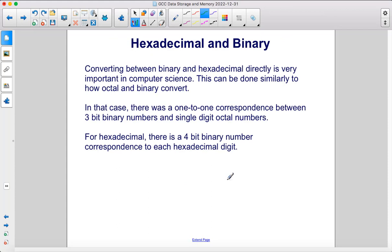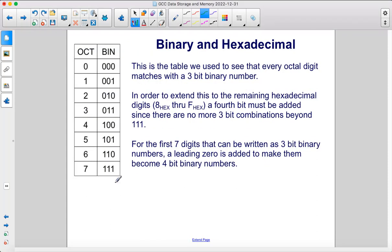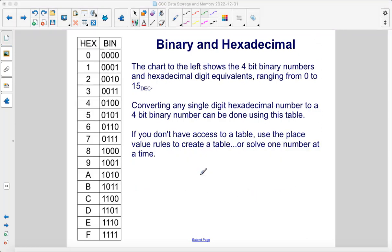Converting between binary and hexadecimal directly is very important in computer science. This can be done similarly to how octal and binary convert. In that case, there was a 1 to 1 correspondence between 3-bit binary numbers and single-digit octal numbers. For hexadecimal, there's a 4-bit binary number correspondence to each hexadecimal digit. This is the table we used to see that every octal digit matches with a 3-bit binary number. In order to extend this to the remaining hexadecimal digits, 8 through F, a 4th bit must be added since there are no more 3-bit combinations beyond 1, 1, 1. For the first 7 digits that can be written as 3-bit binary numbers, a leading 0 is added to make them become 4-bit binary numbers. The chart to the left shows the 4-bit binary numbers and hexadecimal digit equivalents, ranging from 0 to 15 in decimal.